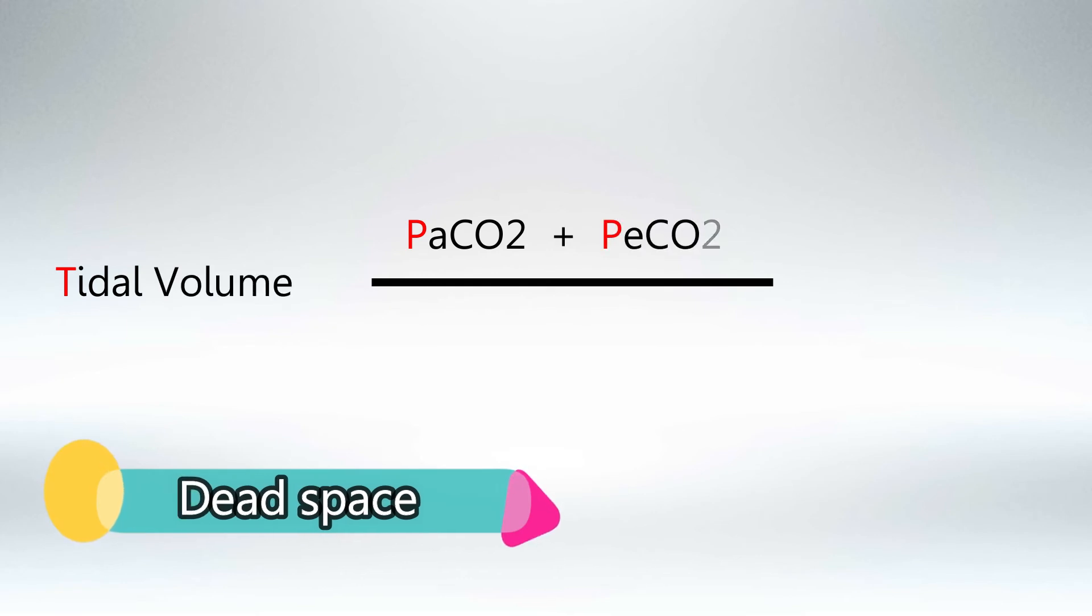Dead space is tidal volume multiplied by the pressure of arterial carbon dioxide plus the pressure of expiration carbon dioxide over the pressure of arterial carbon dioxide. To remember, you should remember this funny mnemonic, which is PaCO2 PaCO2 PeCO2 PaCO2.